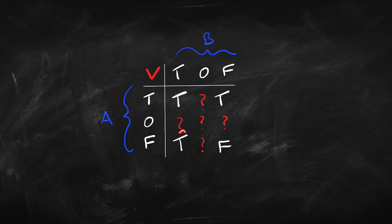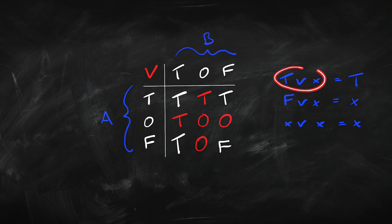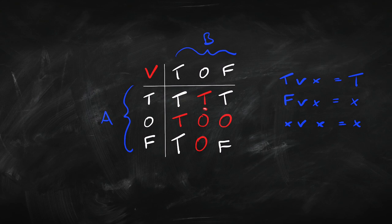What about disjunction? We do the same thing. The four classical combinations: both true gives true, one true still gives true, both false gives false. For the new cases: if one disjunct is true, the whole thing is true; if one disjunct is false, the whole thing is whatever the second disjunct is; and if both disjuncts take the same value, so does the disjunction — so both 'other' gives 'other.' That is our truth matrix for disjunction.